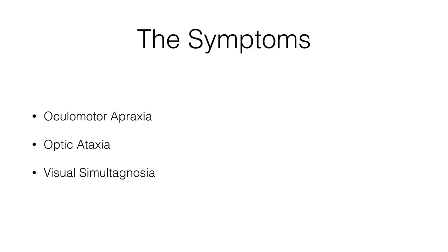There are three symptoms that make up this disorder. The first is oculomotor apraxia — the inability to control your eyes to direct them toward an object. This is something most people take for granted. For example, if you look at your keyboard or anything around you, you can direct your eyes there without difficulty. People without Balint syndrome can just control their eyes and they simply work.